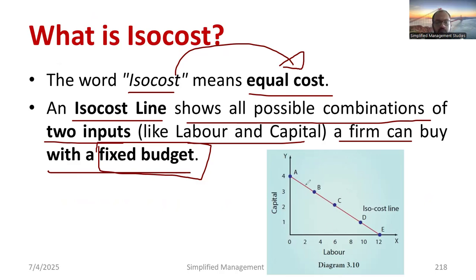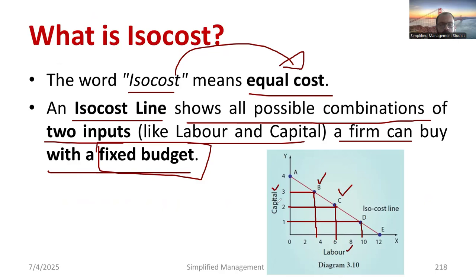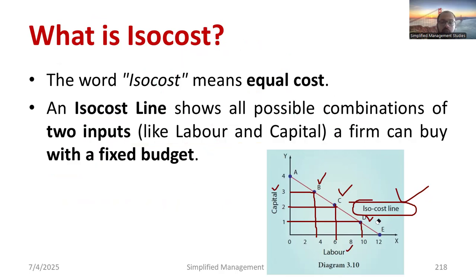The shape of the ISO cost curve has two input parameters: capital and labor. Sometimes you have more capital but choose a very less amount of labor — that falls on one ISO cost point B. If more labor is available but capital is slightly less, we choose point C. If we have more labor but very less capital, we choose point D. Combining points A, B, C, D gives us the ISO cost line. Budget is fixed and we adjust the inputs.